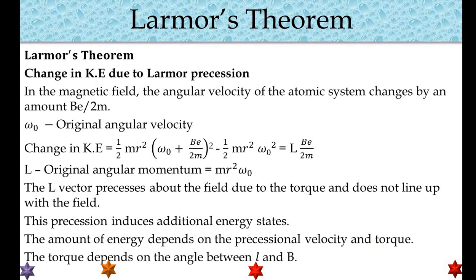In the magnetic field, the angular velocity of the atomic system changes by an amount Be/2m. ω₀ is the original angular velocity. The change in kinetic energy is given by ½mr²(ω₀ + Be/2m)² - ½mr²ω₀² = L·Be/2m.